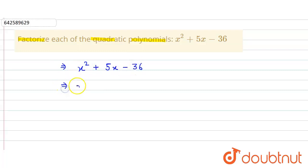So we get x² and then this +5x can also be written as +9x - 4x.